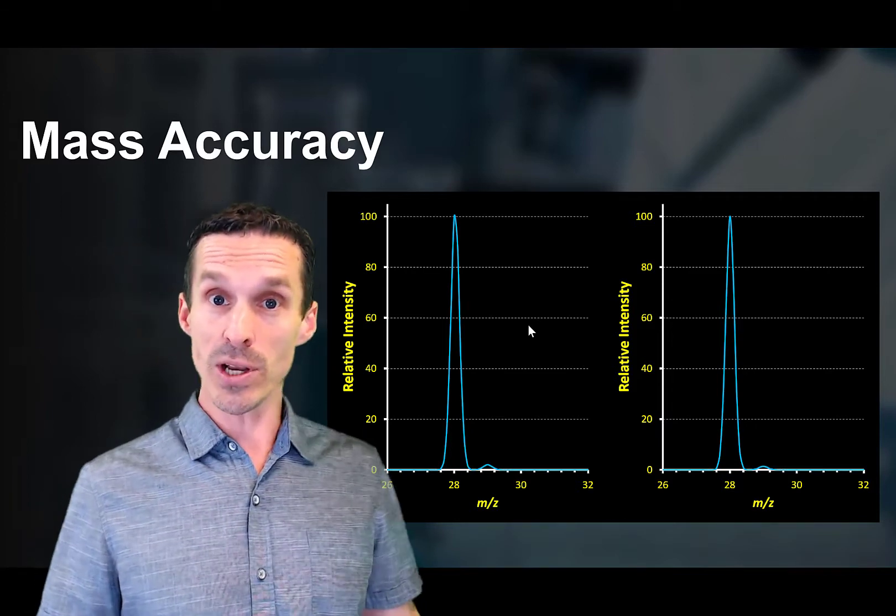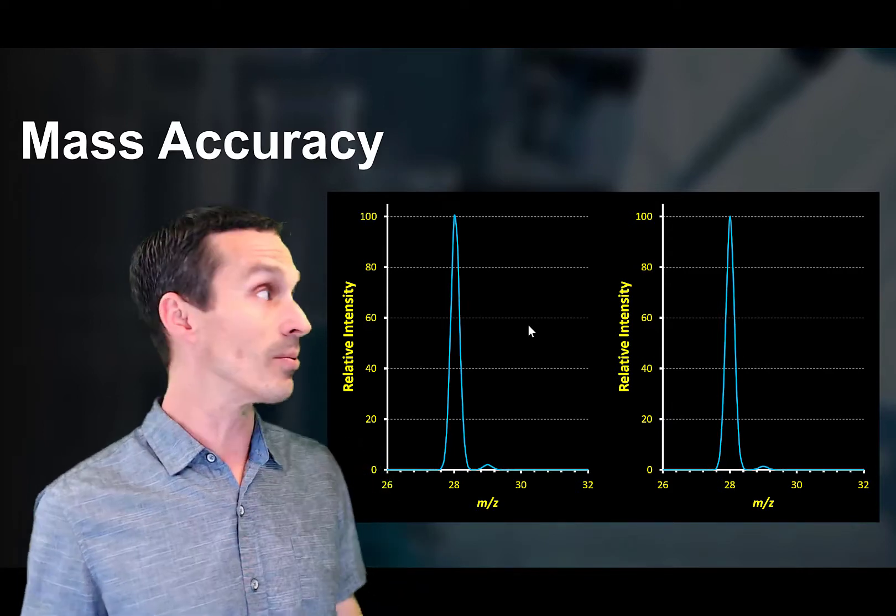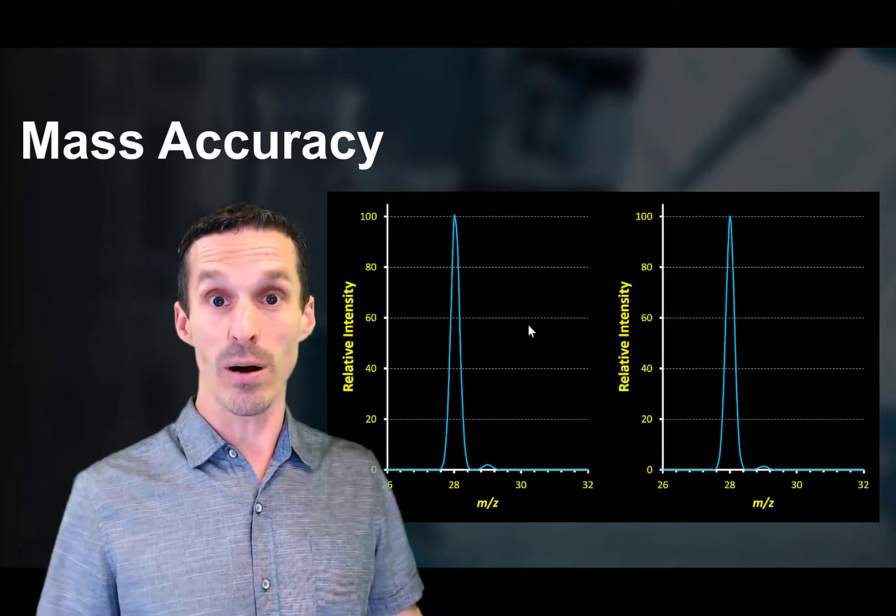So we talked about isotopes in a previous video. Today we're going to talk about mass accuracy. So small shifts in the mass that make a big difference in reporting what a compound might be.